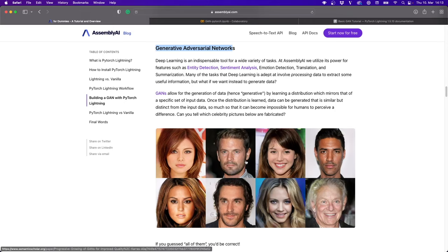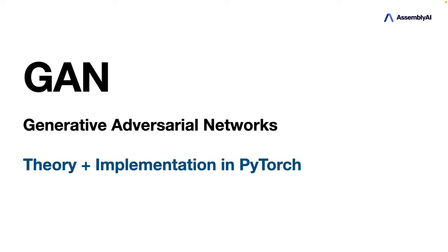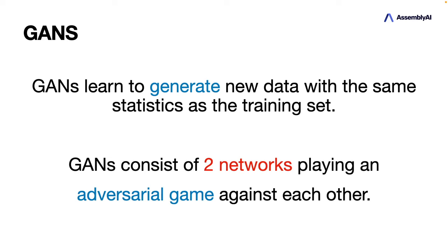Let's look at the theory first. The idea is actually brilliant — it's simple but super powerful. GANs learn to generate new data with the same statistics as the training set. GANs consist of two networks playing an adversarial game against each other — that's why the name is Generative Adversarial Networks. The goal is to generate fake data that is as close as possible to the training data.